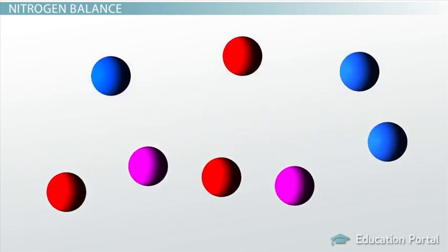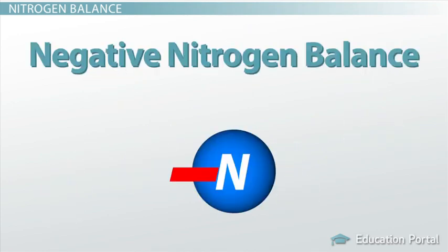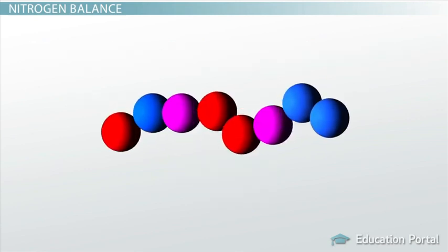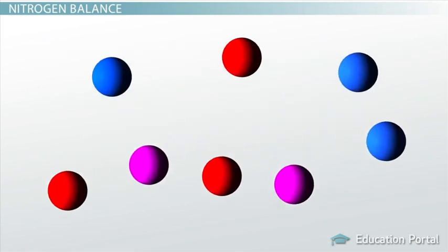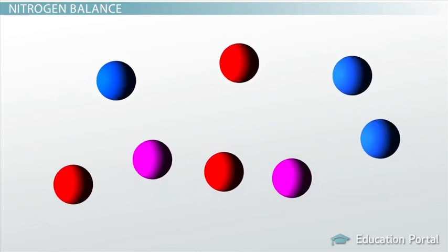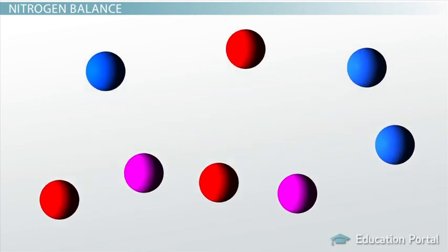As you might imagine, this process can work in the opposite direction as well. A negative nitrogen balance occurs when nitrogen loss exceeds nitrogen intake. When your body is in a state of negative nitrogen balance, your intake of protein is not keeping pace with the needs of the body, or your body is breaking down protein faster than it can be synthesized.